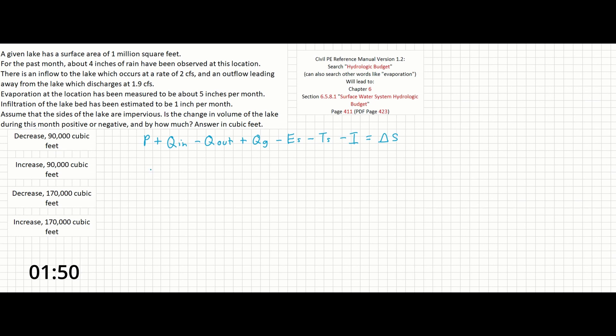As you can see in the reference manual, P stands for precipitation, Q_in is the surface water flow into the system, Q_out is the surface water flow out of the system, Q_s is the groundwater flow into the stream or lake, E_s is the surface evaporation, T_s is transpiration, I is infiltration, and ΔS is the change in the water storage of the surface water system.